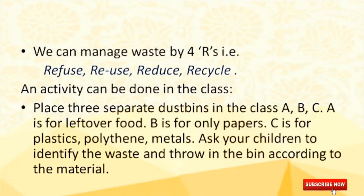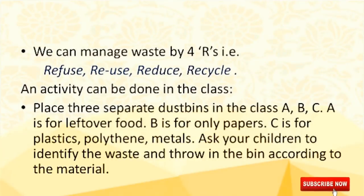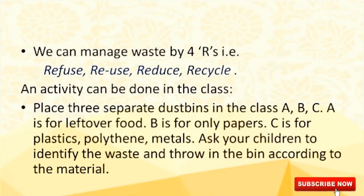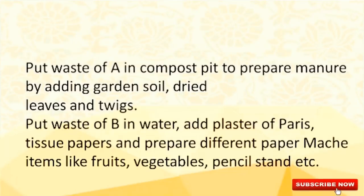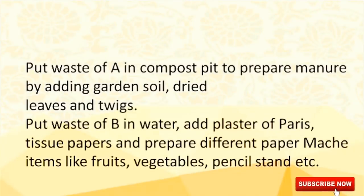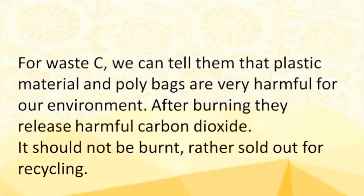An activity can also be done in the class. For example, the teacher can place 3 separate dustbins in the class, named A, B, and C. Dustbin A is for leftover food, B is for papers only, and C is for plastics, polythene, and metals. Ask children to identify the waste and throw it in the bin according to the material. Put waste of A in a compost pit to prepare manure by adding garden soil, dried leaves and twigs. Put waste of B in water, add plaster of Paris and tissue paper, and prepare different papier-mâché items like fruits, vegetables, pencil stamps, etc.